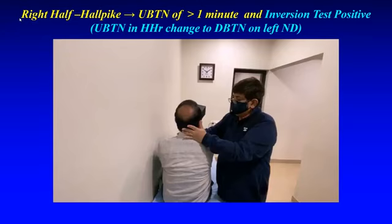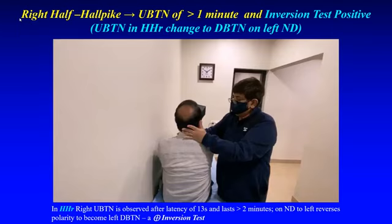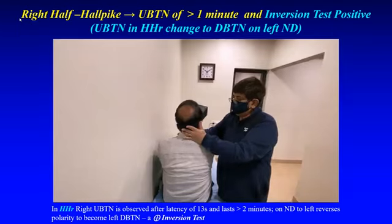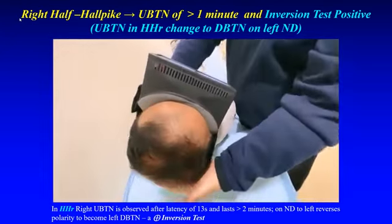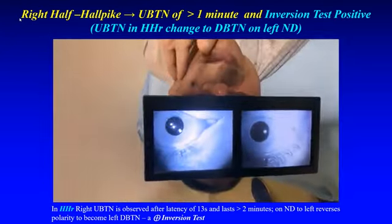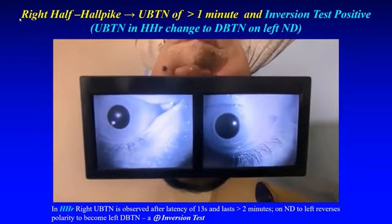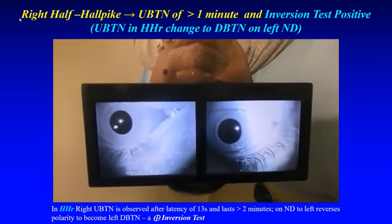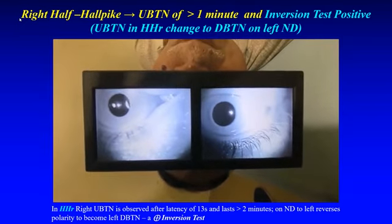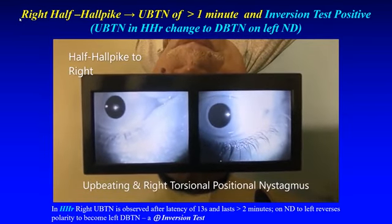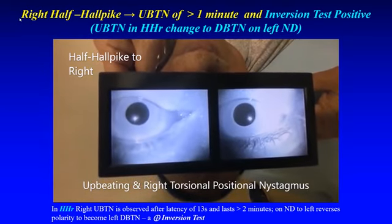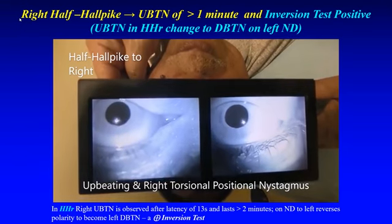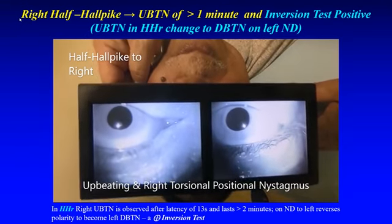This is a 63-year-old male patient who came with history of positional vertigo of the positional type for the past 15 days. On right half-Alpike position, after a latency of 30 seconds, he elicits a prolonged duration right torsional upbeating nystagmus. I have scrolled this video to 1 minute to show that the nystagmus is still present, and at 1 minute and 54 seconds it is still present.